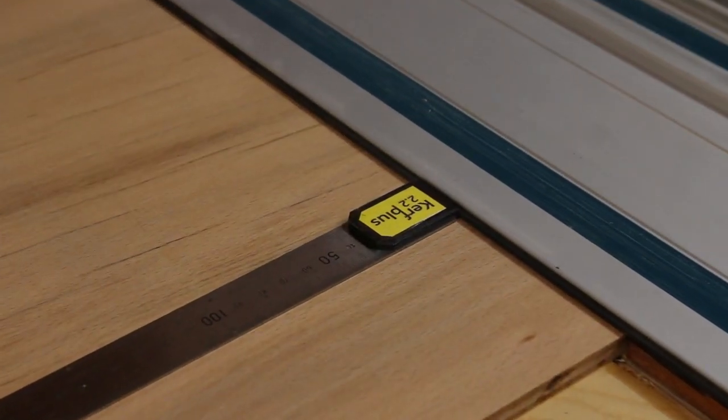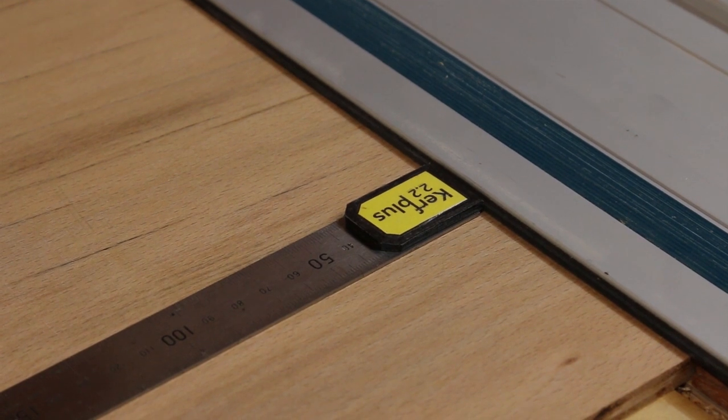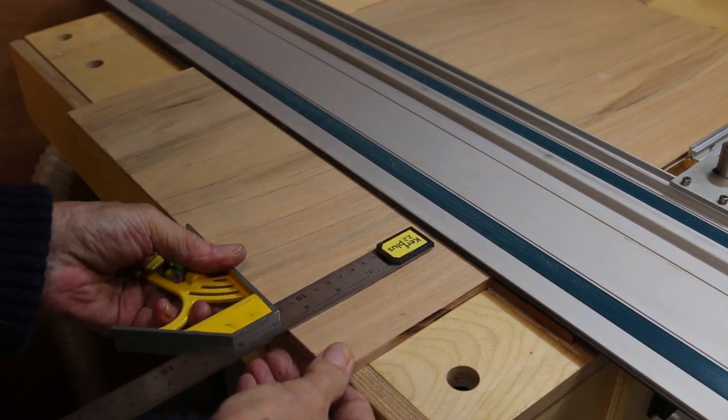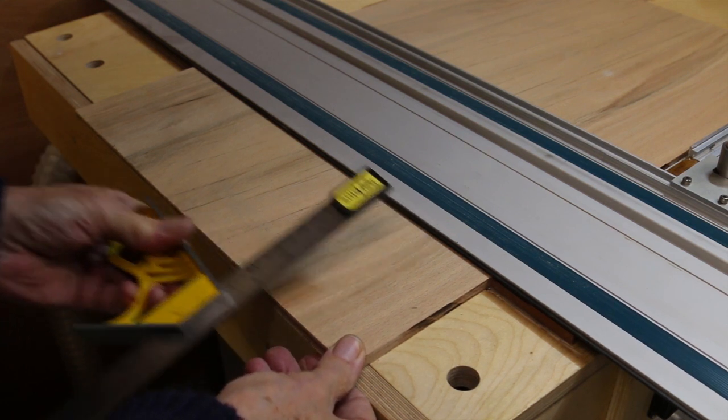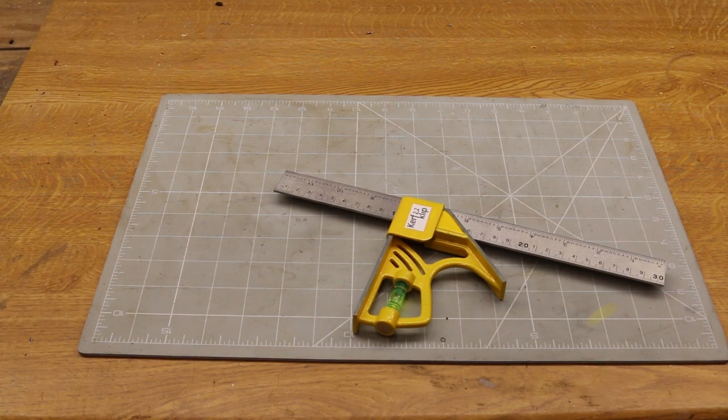I've marked mine with the kerf side in millimeters, 2.2 millimeters for mine, in case I get different thickness saw blades in the future. You can of course use this on your combination square too. Works just as well. But personally I prefer the rigidity of the kerf clip.